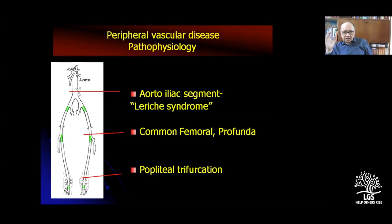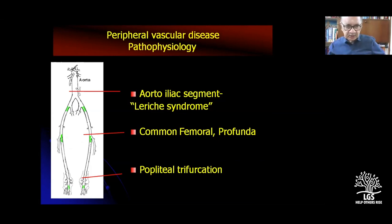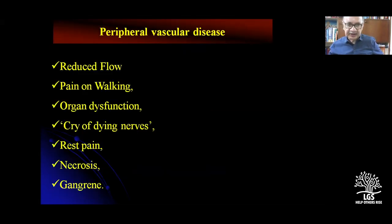The vascular anatomy includes the aorta, iliac, common femoral, and profunda femoris. The profunda femoris artery goes posterior to the neck of the femur — you can always do a profundoplasty. The popliteal trifurcation branches into three branches: anterior tibial, posterior tibial, and peroneal.